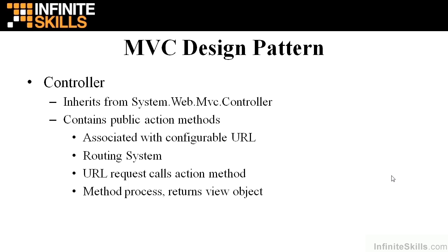The controller inherits from system.web.mvc.controller and it contains public action methods. The action methods are associated with configurable URLs, which gets into the routing system that we'll discuss. A URL request will call an action method in the controller — it can be a post or a get. That action method will process some data and then return a view object. That view object doesn't have to be an entire web page; it can actually just be a view for a particular area of a web page, like a div, for example.